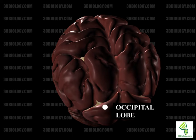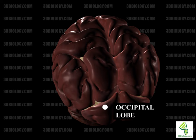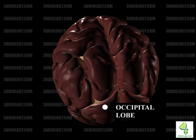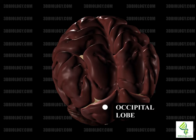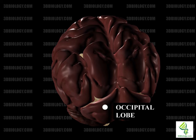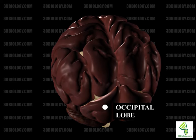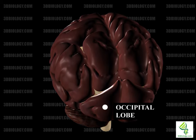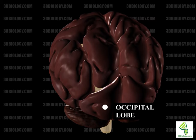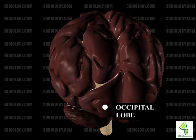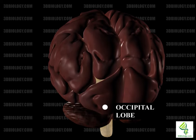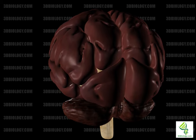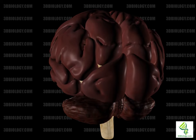The occipital lobe of the cerebral cortex is named after the occipital bone and is the smallest lobe of the cortex. It is located above the temporal and below the parietal lobe. The occipital lobe includes the visual cortex, mainly Brodmann area 17 or V1. It also includes V2, or the ventral stream, which is a secondary visual cortex. Underneath the occipital lobe is the tentorium cerebelli, which divides the cerebellum from the cerebrum. The lateral occipital sulcus separates the occipital gyri.